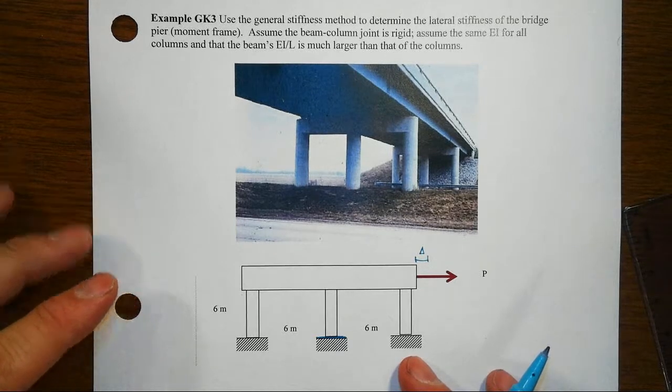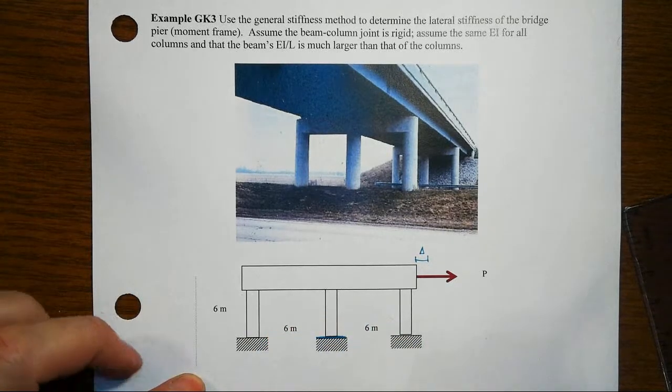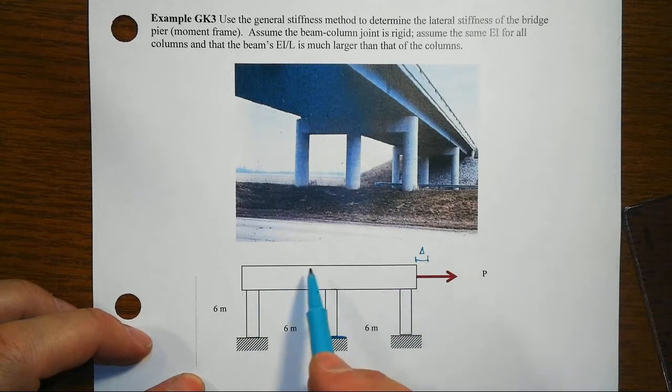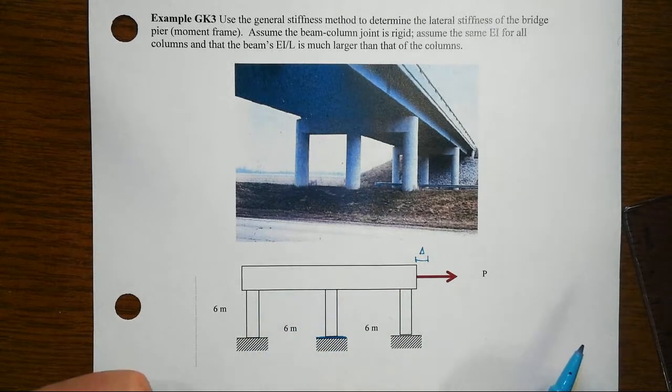We've got same columns all the way through, the same EI over L. And then when we look at this beam that goes across, we're going to make this crude assumption that EI over L of the beams are much greater than EI over L for the columns.